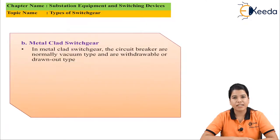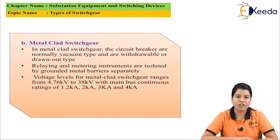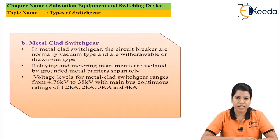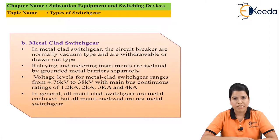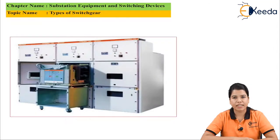In metal clad switchgear, vacuum type circuit breakers are used which can be removed outside the metal box. The relaying and metering instruments used are basically grounded. The voltage level for metal clad switchgear is 4.76 kV to 38 kV and the main bus continuous rating is 1 kV, 2 kV, 3 kV, and 4 kV. All metal clad switchgear are metal enclosed switchgear, but not all metal enclosed switchgear are metal clad switchgear.